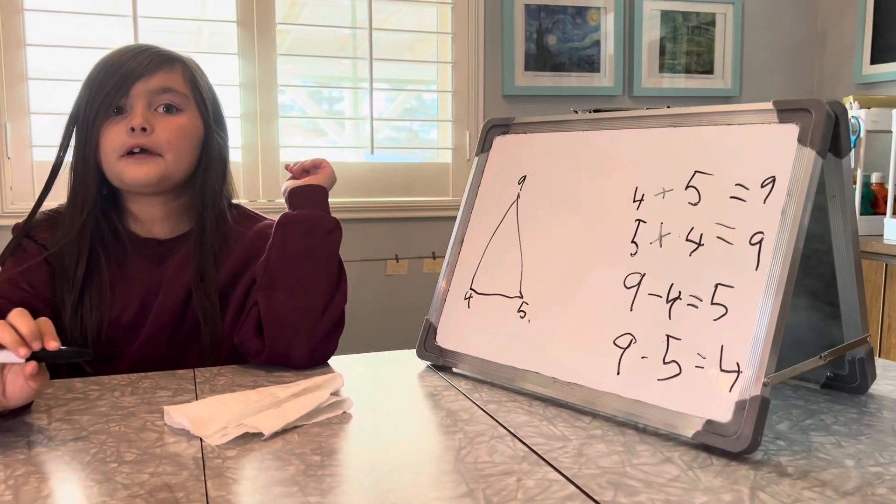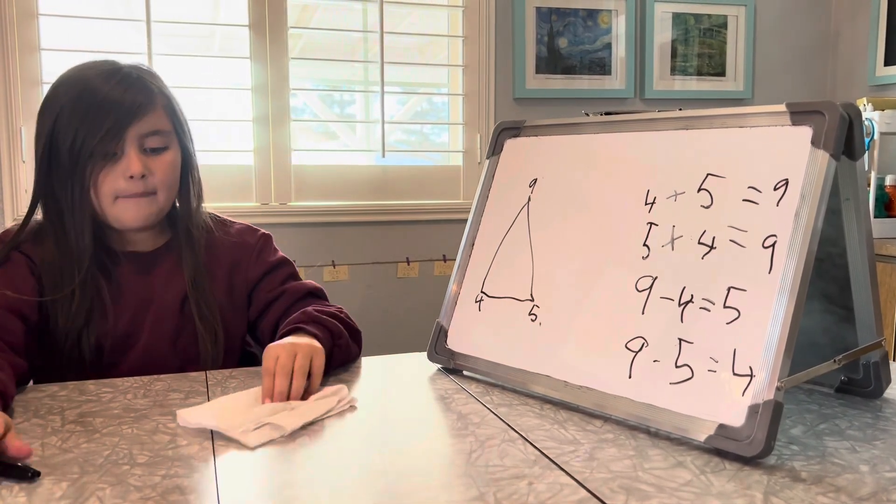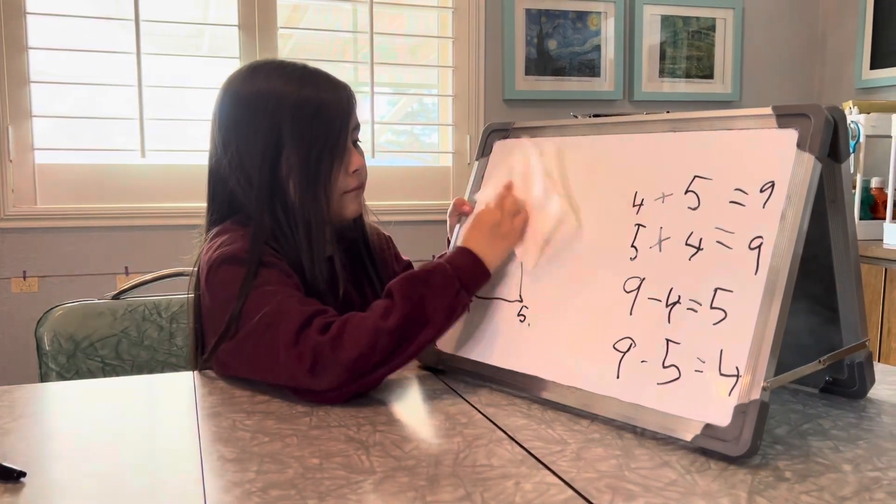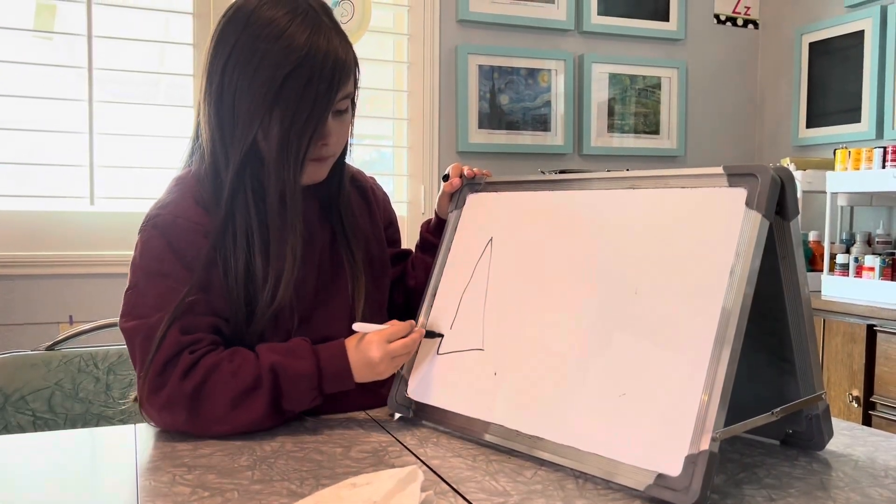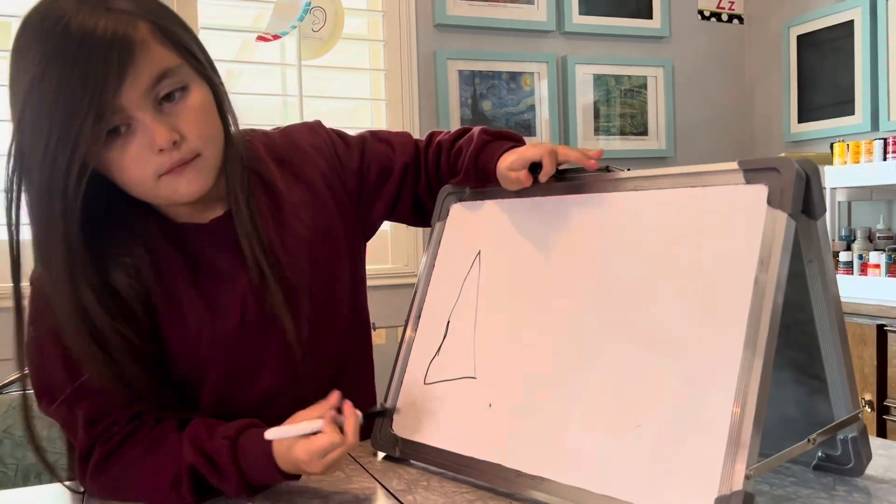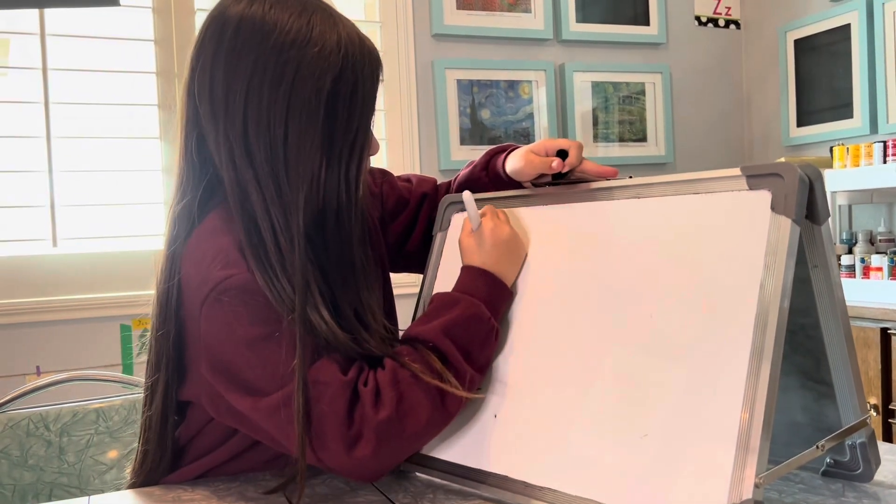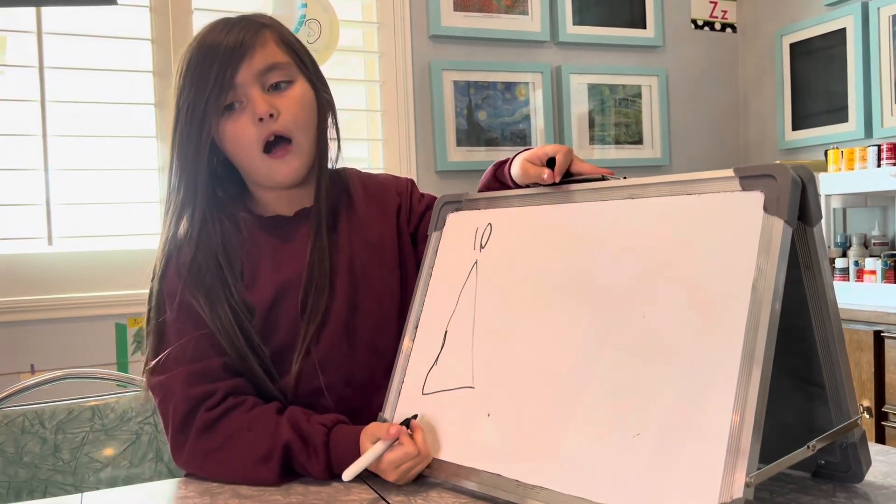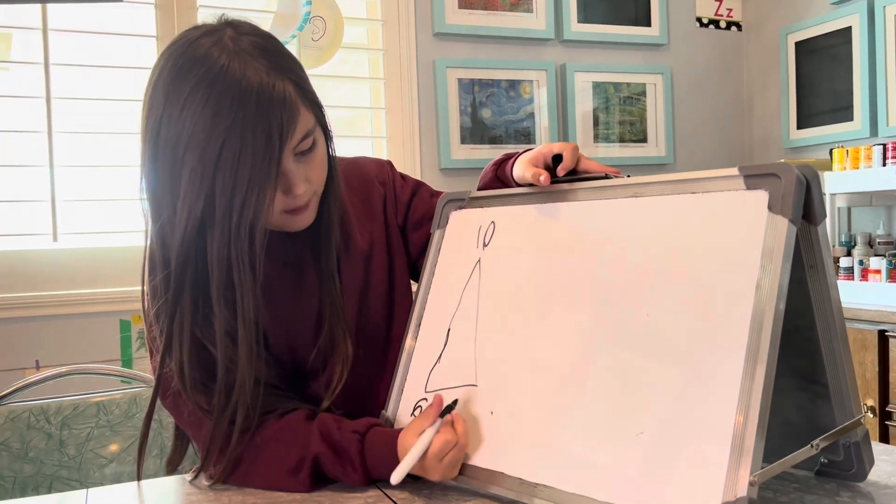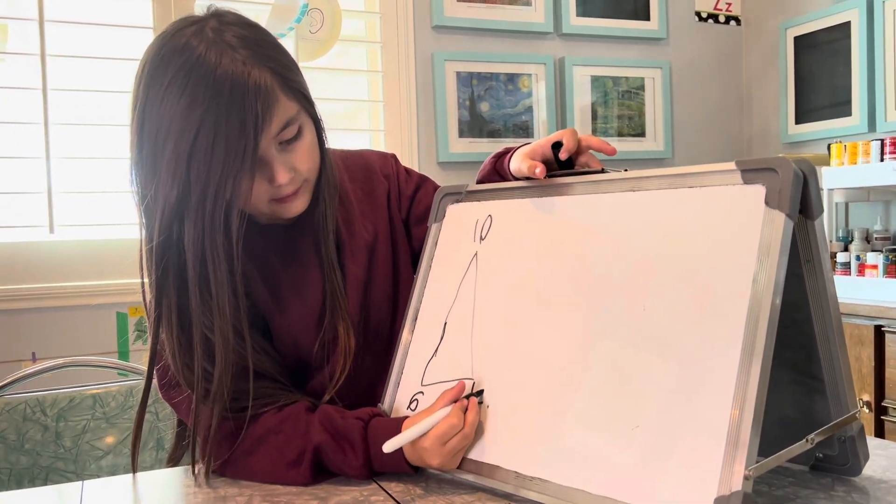Let's do another fun fact family. The biggest number goes at the top, and the two small numbers go at the bottom.